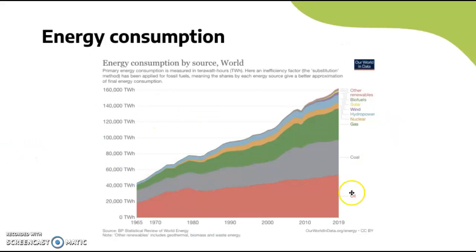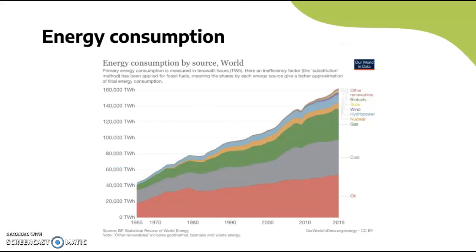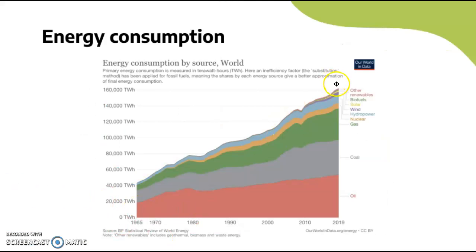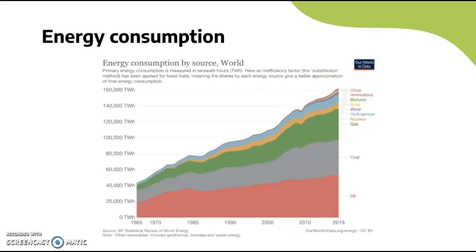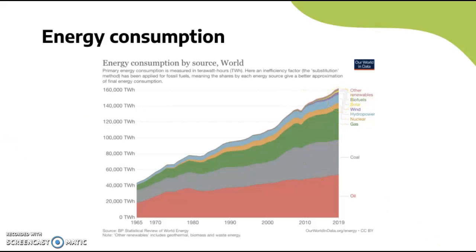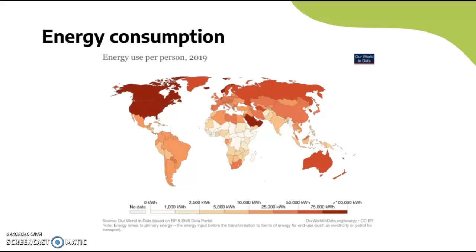Now looking at energy consumption by source across the world — this is not a projection but gives more detail. All the renewables were very slim except for hydro, which has always been present. The other renewables are being introduced from the late 2000s and growing from 2010 onwards. Oil, gas, and coal are still increasing, but growth in renewables may help reduce that as investment makes them cheaper.